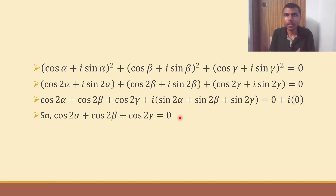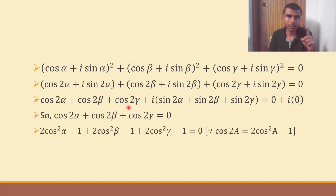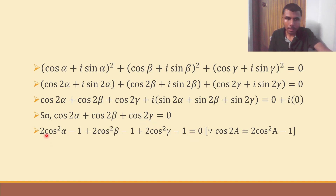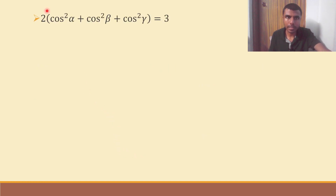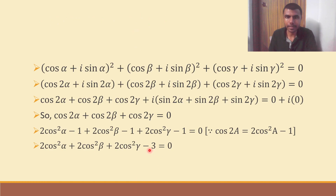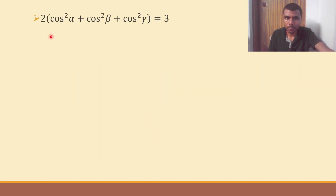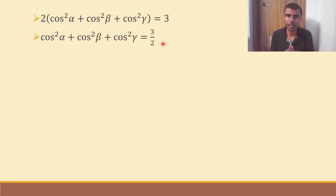Now, what is cos 2α? Cos 2α is nothing but 2cos² α minus 1. Because in first year trigonometry you must have learned that cos 2θ equals 2cos² θ minus 1. Likewise the other two terms are similar. So 2cos² α minus 1 plus 2cos² β minus 1 plus 2cos² γ minus 1 equals zero. The minus 1 minus 1 minus 1 is minus 3. Take 2 common: 2 into cos² α plus cos² β plus cos² γ minus 3 equals zero. Send minus 3 to the RHS, then divide by 2: cos² α plus cos² β plus cos² γ equals 3/2.